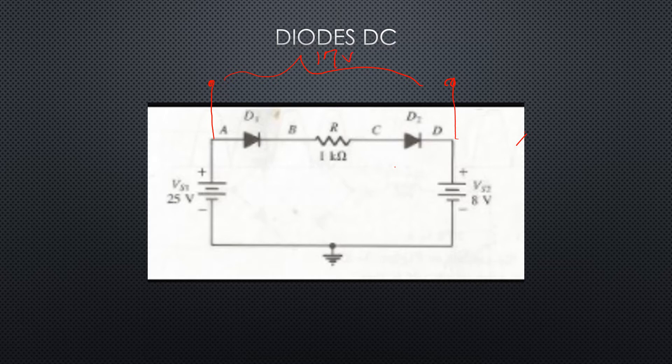It is positive at A with respect to D, so the diodes are forward biased. We know that we've got 17 volts potential there, so now we can put in those polarity drops and voltage drops.